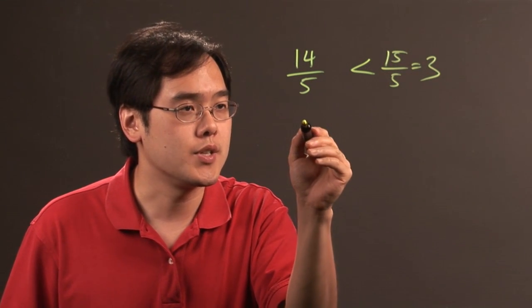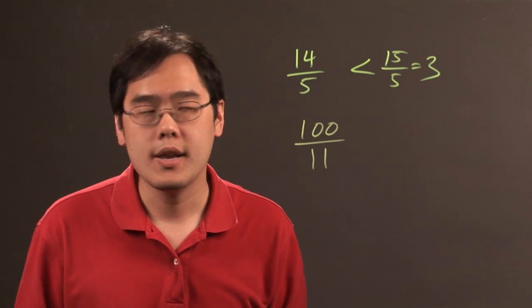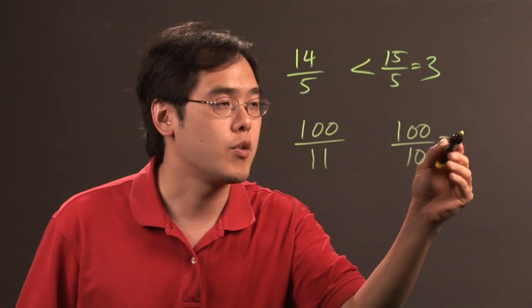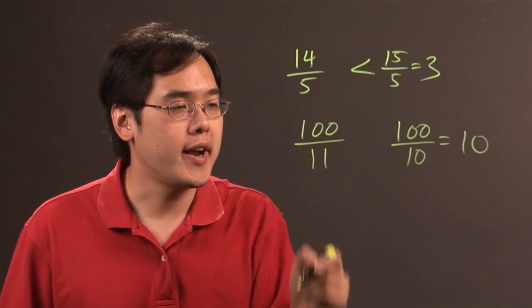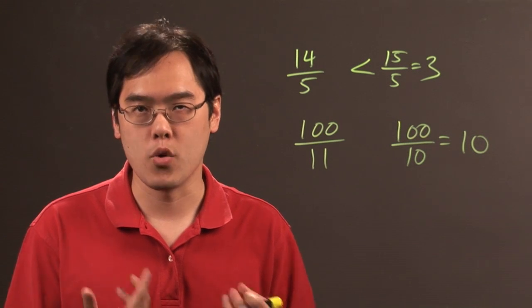Another example to consider is 100 over 11. That's going to be compared to 100 over 10, which equals 10. Because you're dividing by 11, you're dividing by more pieces.